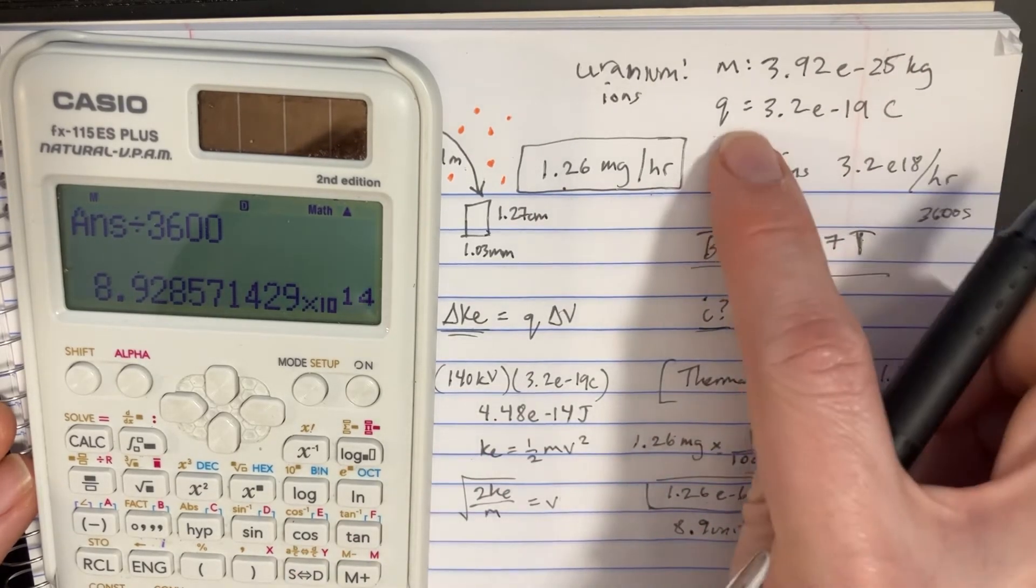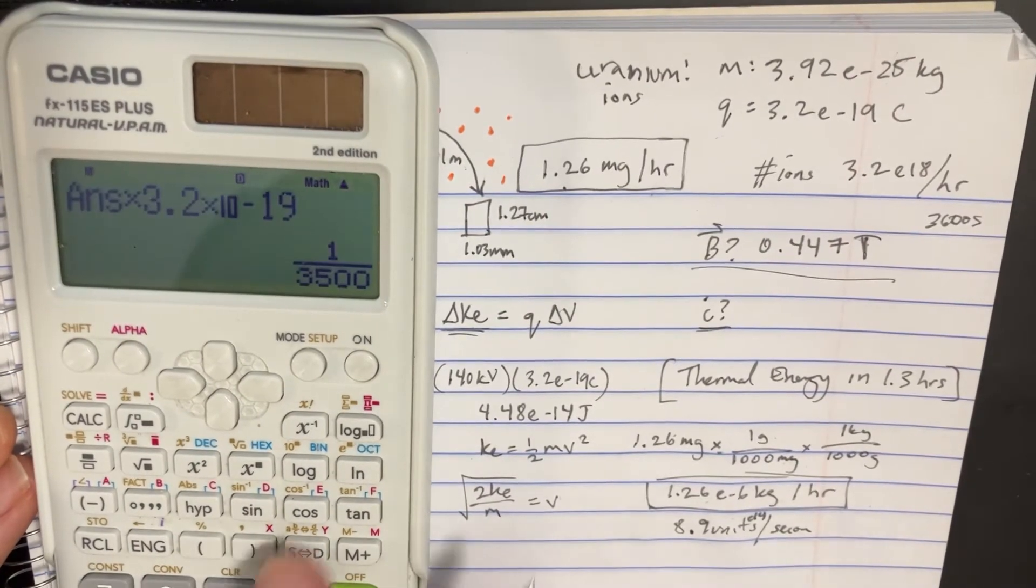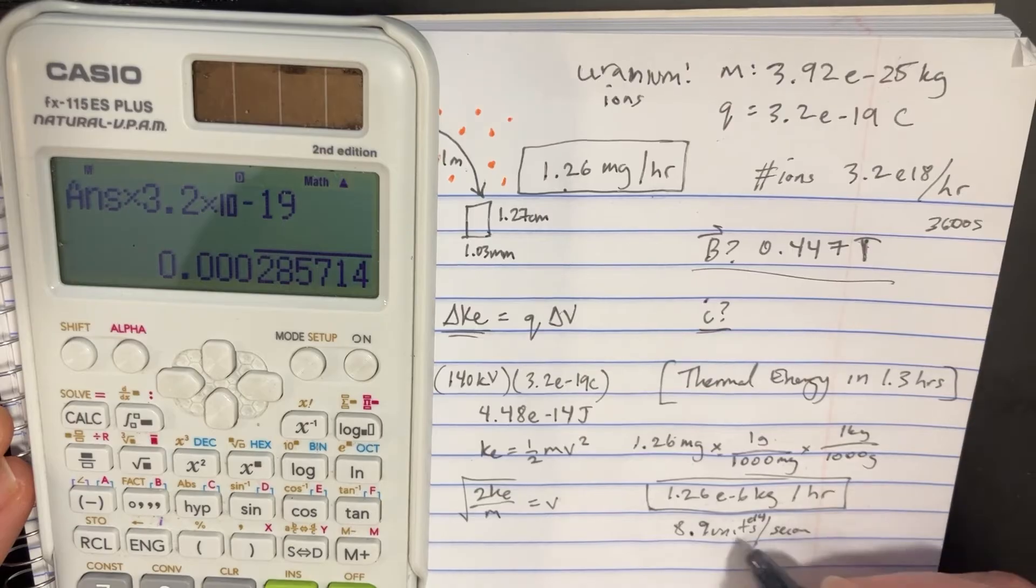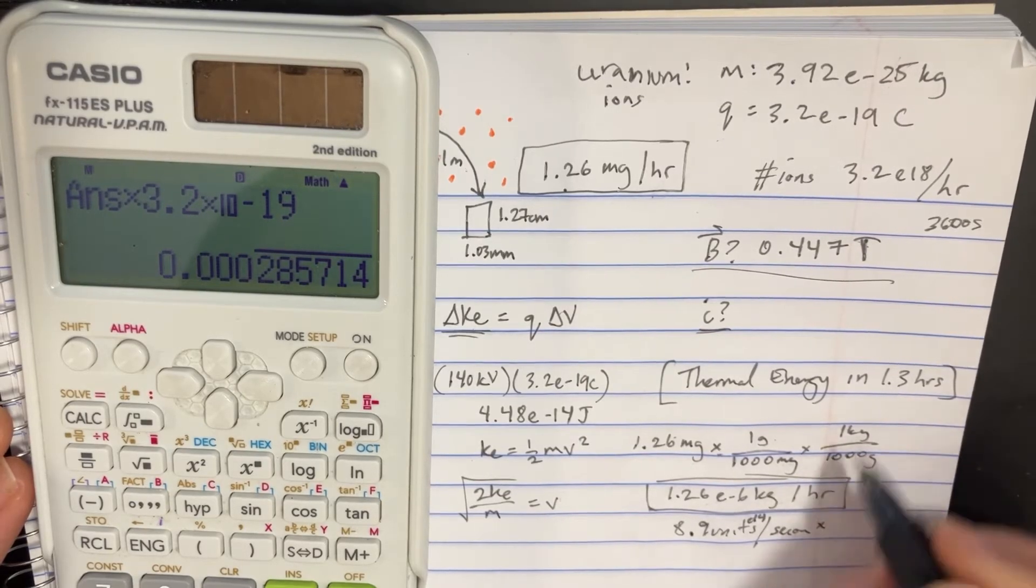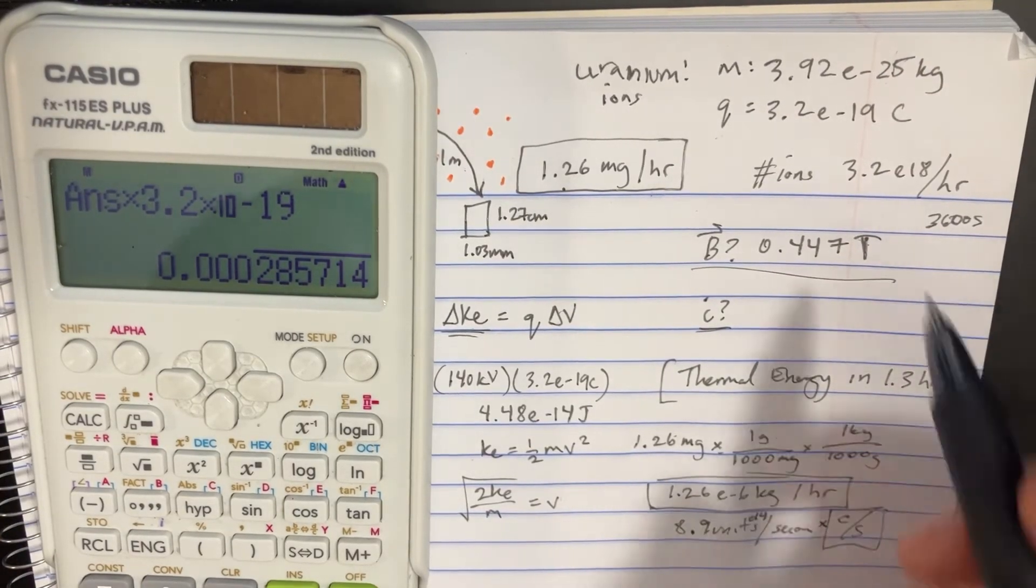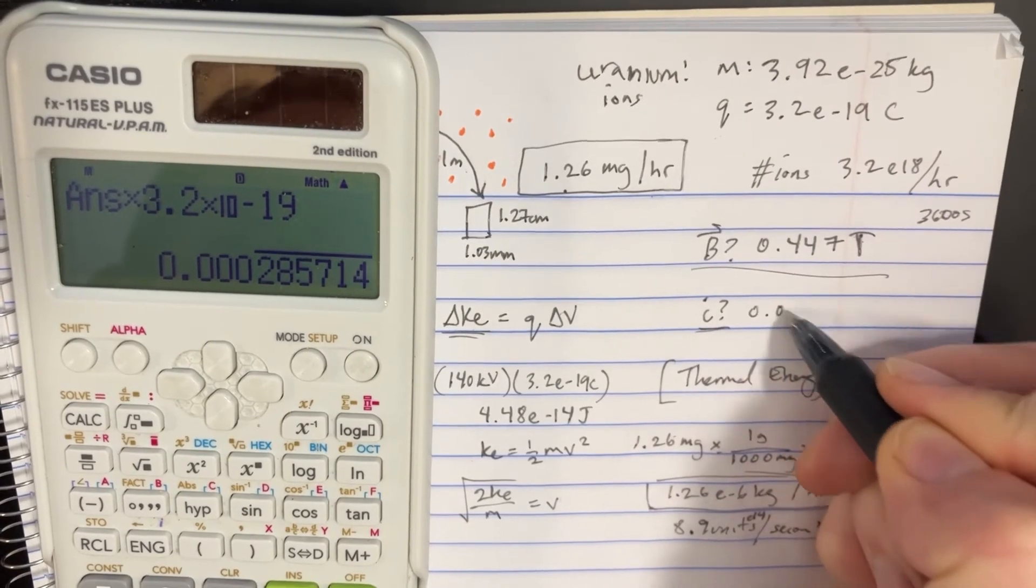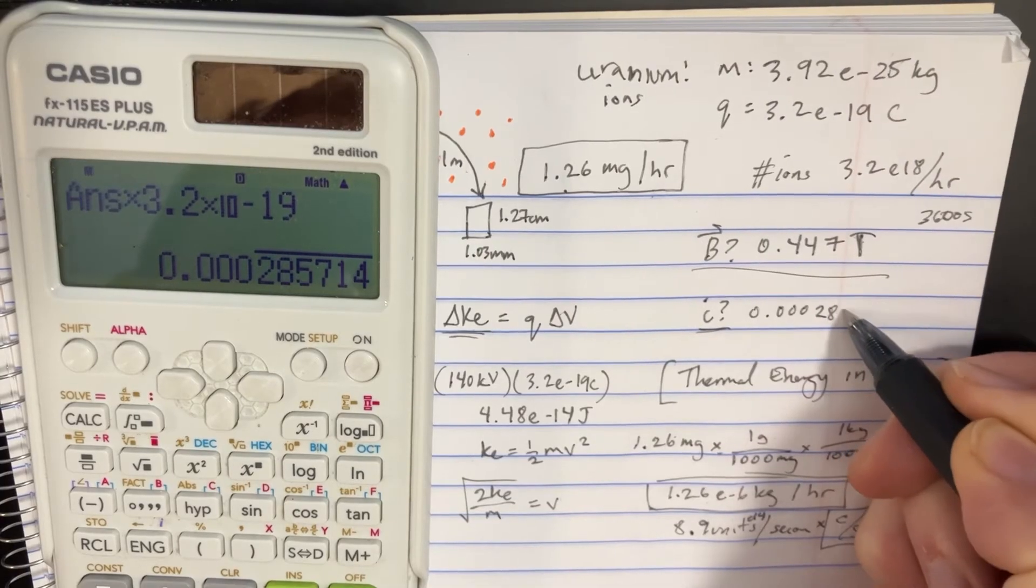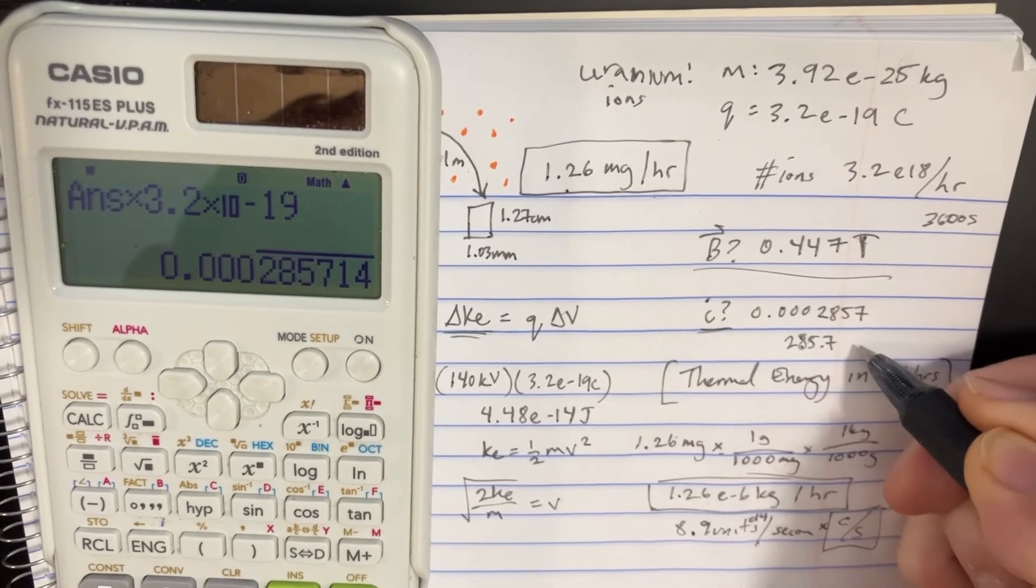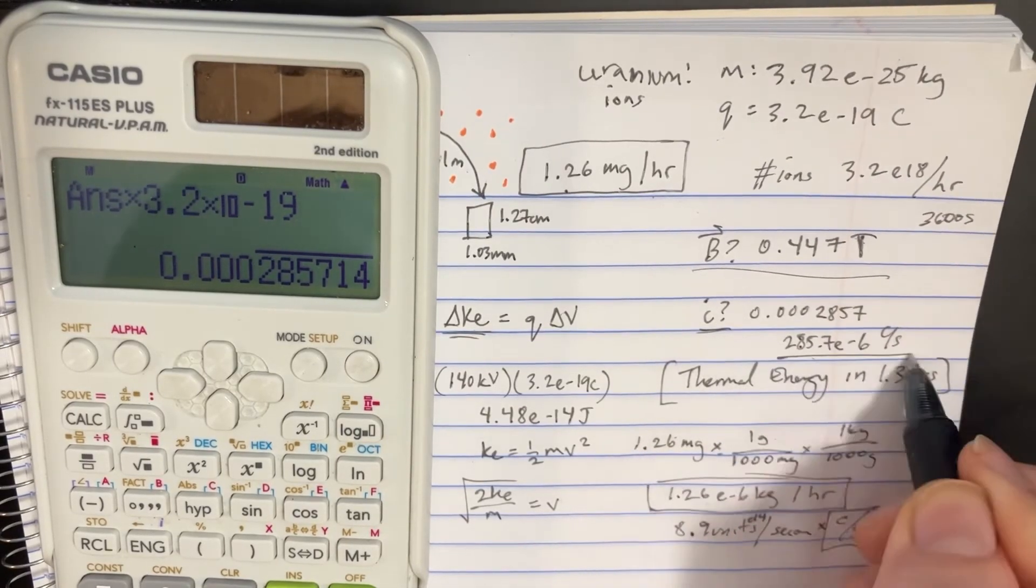We're going to do this and then multiply by the charge times 3.2 negative 19 which will give us the current. Units per second but we're going to multiply that by the coulombs on top so that way we get coulombs per second. This is all about unit conversions. We have 0.000 2857 so you could convert that to 285.7 to the negative 6 coulombs per second for the current.